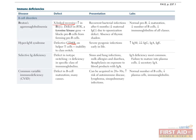Common variable immunodeficiency can present as late as the third or fourth decade. This condition has numerous causes, all of which converge in the common feature of defective B cell maturation. This results in a normal number of B cells but a decrease in the mass of plasma cells and, consequently, immunoglobulin. Patients with CVID are at increased risk of autoimmune diseases, lymphoma, and sinopulmonary infections.